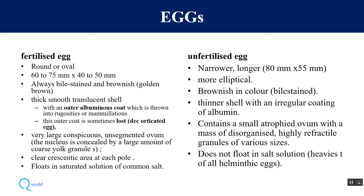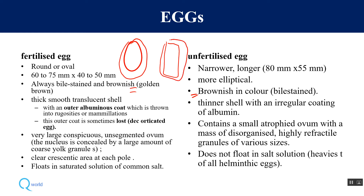The second morphological form is the egg. There are two types: fertilized and unfertilized. The fertilized egg is usually round in shape, while unfertilized eggs are longer and narrower. Both are brown in color. The fertilized egg has a thick translucent shell, while the unfertilized egg has a thinner shell and contains a very large unsegmented ovum because it is unfertilized, and has an atrophied ovum.